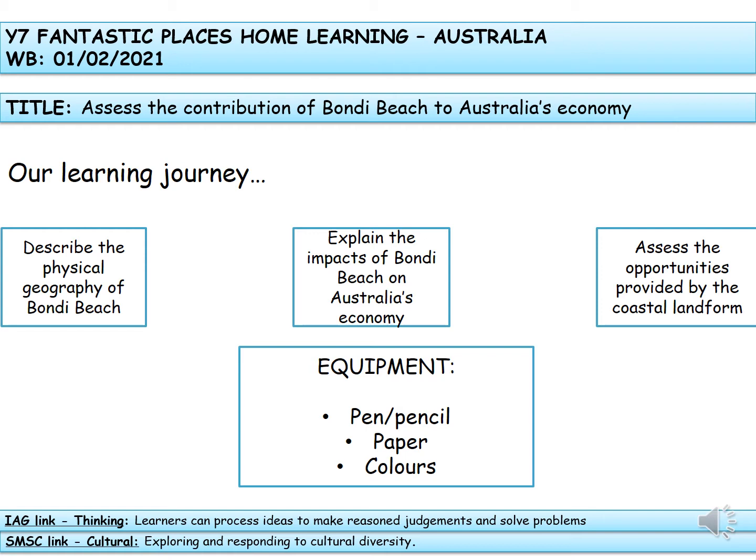Our learning journey for this lesson: number one, to describe the physical geography of Bondi Beach, focusing on how it was formed. The second thing we're going to do is explain the impacts of Bondi Beach on Australia's economy — how does it help make money. Finally, we're going to talk about the opportunities provided by the beach. The equipment you'll need is a pen or pencil, some paper, and colours for our final activity.